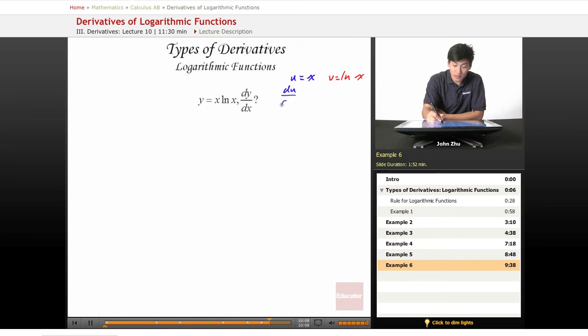du dx is going to equal 1 and dv dx is going to equal 1 over x, just by the straightforward property of derivative of natural log. So then when we look at dy dx,